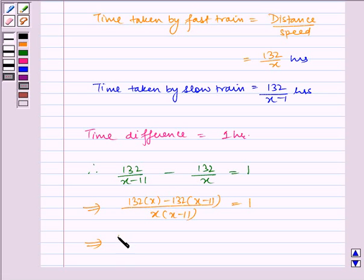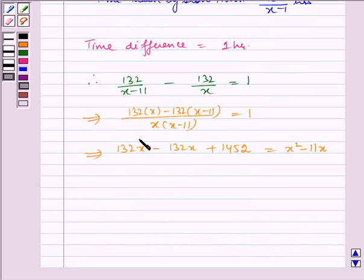Which implies 132x minus 132x. This gets cancelled. So we get plus 1452 is equal to x squared minus 11x.